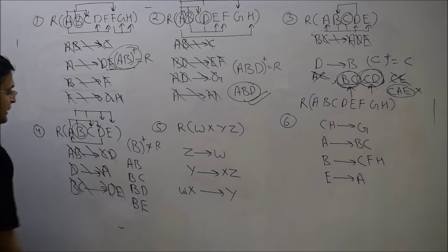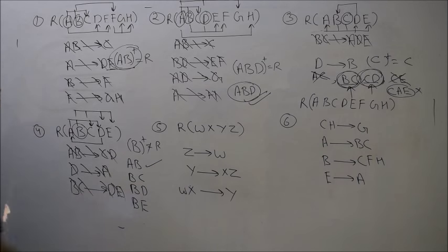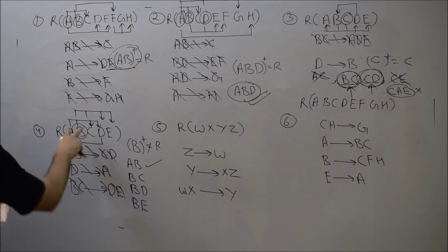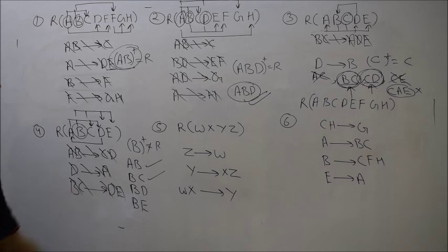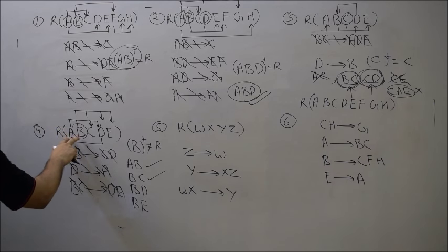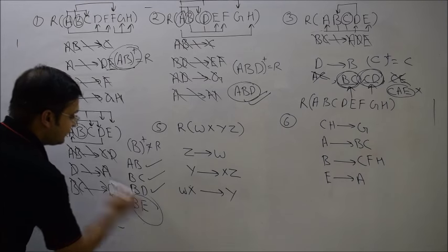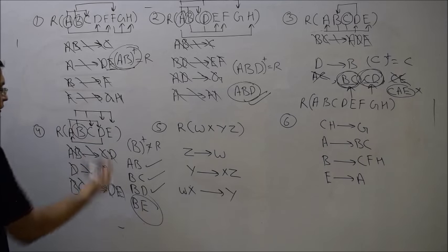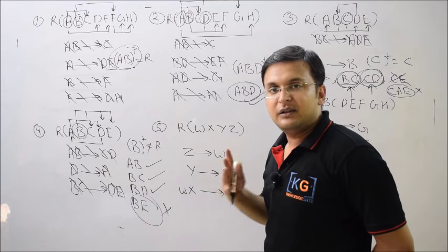Is AB a key? From AB I can find C and D, and from BC I can find E — yes, AB is a candidate key. Is BC a key? From BC I can find D and E, and from D I can find A — yes, BC is a candidate key. Is BD a key? From D I can find A, and from AB I can find C and D, and from BC I can find E — yes, BD is also a candidate key. Is BE a key? With B and E I cannot find the remaining attributes — so BE is not a key.